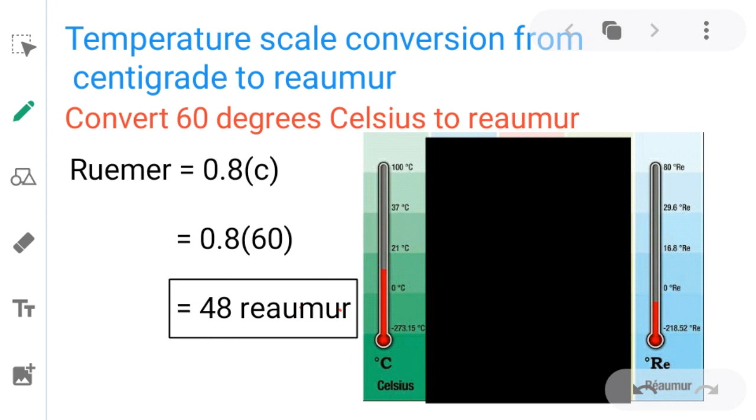Here you may observe in the diagram the Celsius - in Celsius the boiling point of water is 100 degree and the freezing point is 0 degree. But in case of Réaumur the freezing point of water is 0 degree but the boiling point is 80 degree.